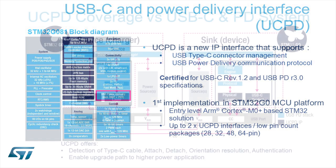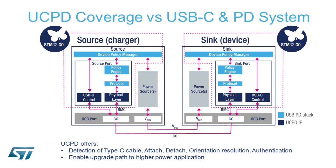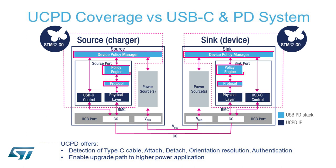Let's see what the USB PD IP will cover in a USB-C and power delivery system. As we can see here, the USB PD will cover the physical layer and the USB-C control. On top of that, we provide a USB PD stack that runs on the STM32 G0. This stack provides the protocol, the policy engine, and also the device policy management for both source and sink.